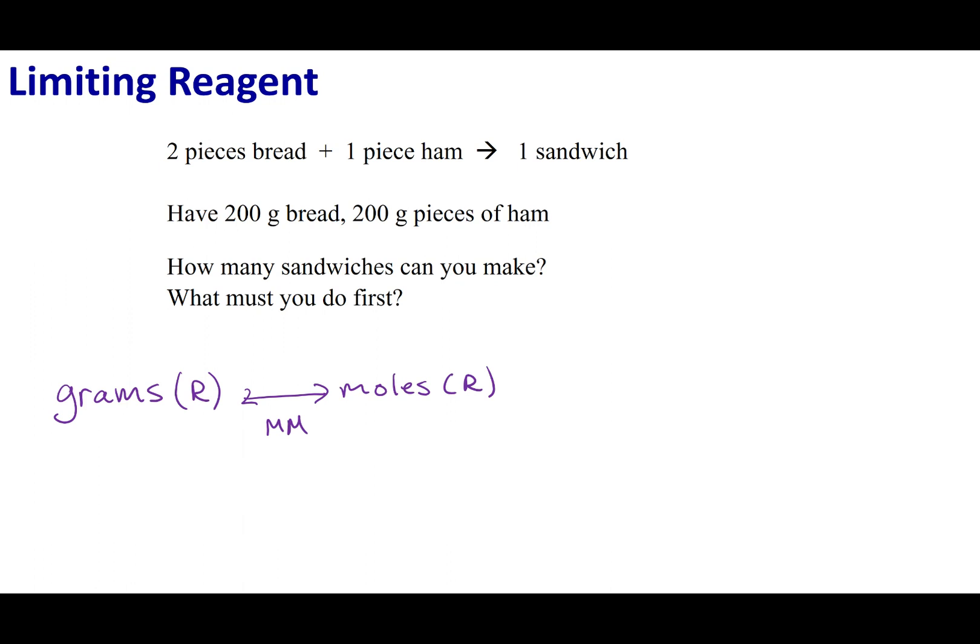Once I have the moles of reactant, I can go to the moles of my product by understanding that the chemical equation can be read in terms of moles. Going from moles of reactants to moles of products takes stoichiometry. The last thing is getting to grams of products using molar mass again.